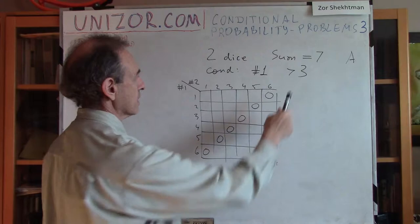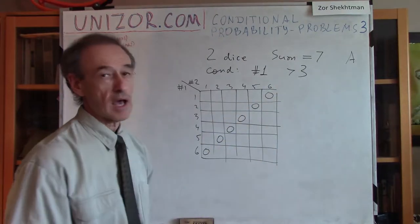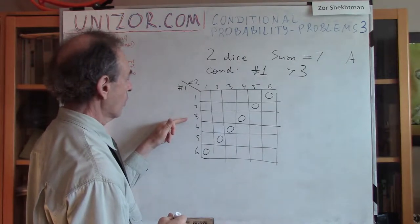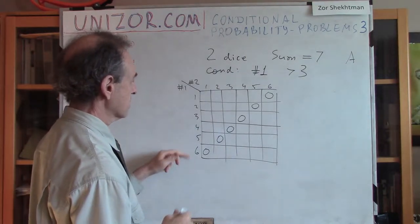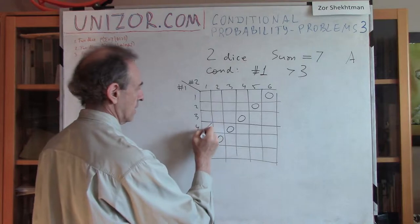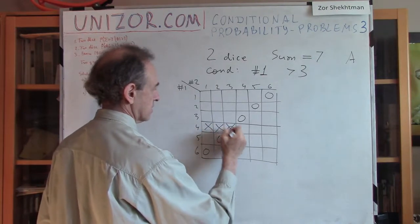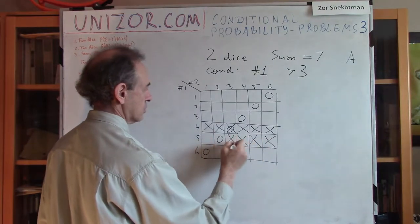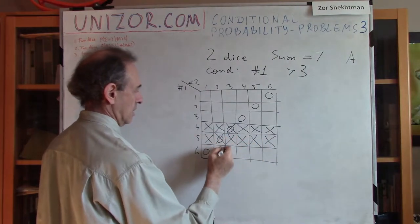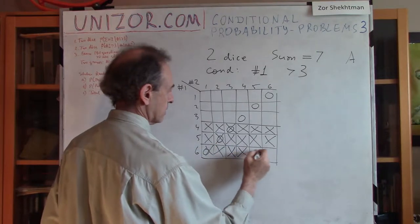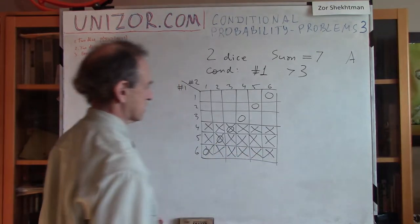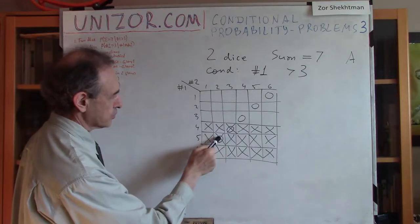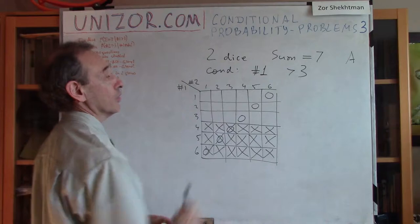Now, what are the events when the first die shows greater than three? The first die corresponds to the row, so rows four, five, and six — that's 18 cells forming condition B. As you can see, three of these cells lie at the intersection of both A and B.